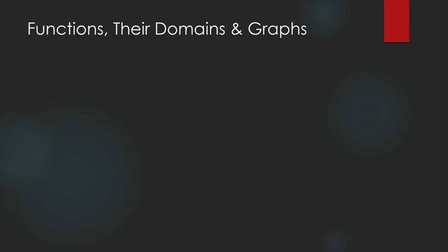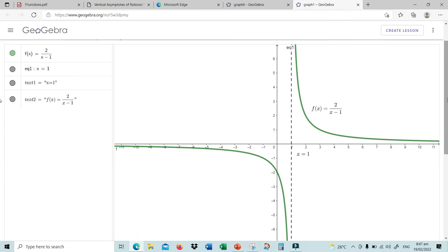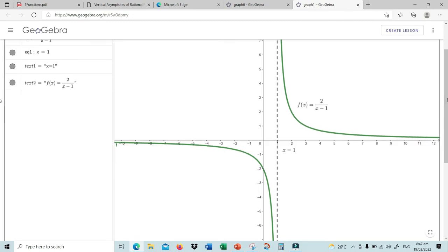Let us now look briefly at the graphs of these functions to see the relationship between the domain and the graph. For f(x) = 2 / (x − 1), the domain is all real numbers except x = 1. The graph will never contain a point where the x-coordinate equals 1, which is why there is a vertical asymptote at x = 1. The asymptote is drawn to indicate that the graph must not touch or cross that line.